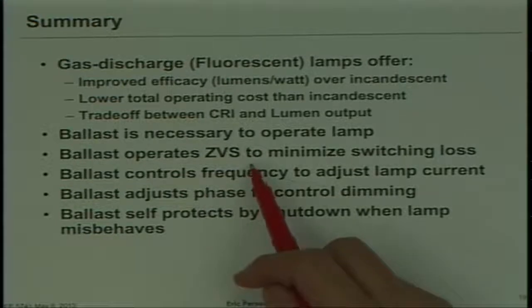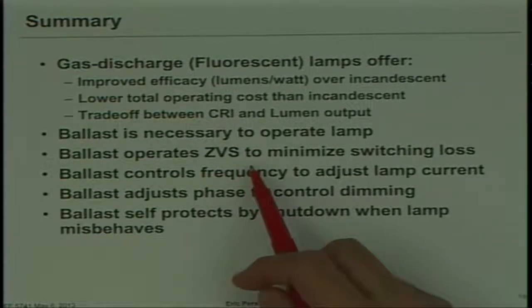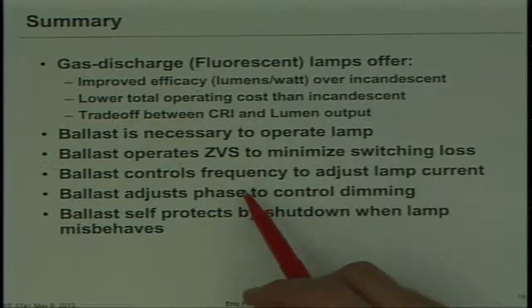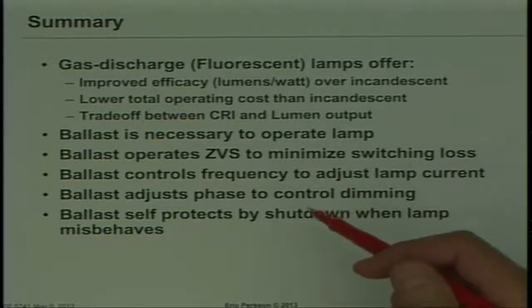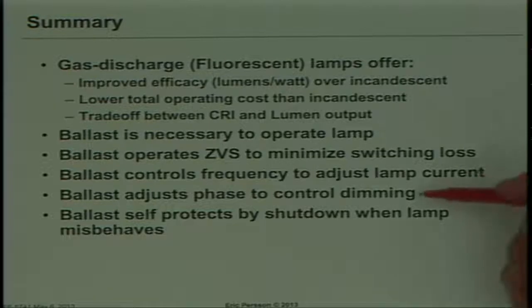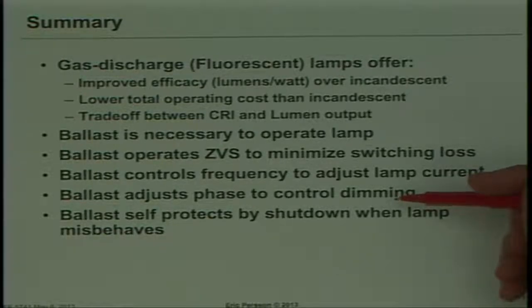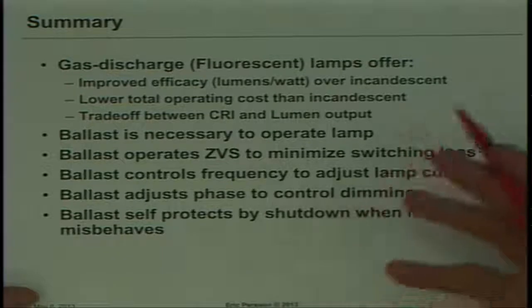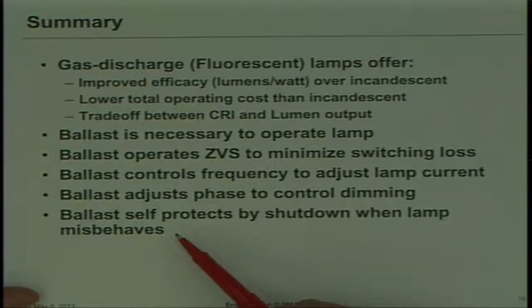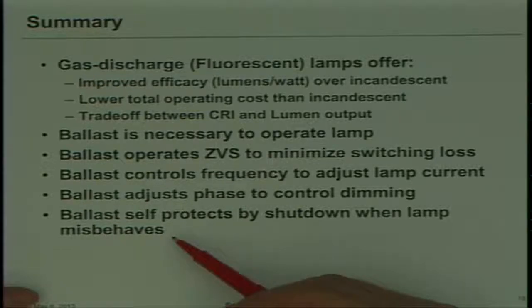The ballasts operate in ZVS, so these are operating parallel resonant above resonance, and this is to minimize the switching frequency. Control parameter is basically frequency, so by ramping frequency up and down, you can run through all these modes and control the current and power to the lamp. For dimming, you can adjust the, essentially by shifting frequency, you can change the phase between lamp voltage and current and get nice linear dimming. Ballasts need to be able to recognize when there are fault conditions and take the appropriate corrective action. For example, if the lamp breaks, you don't want to be trying to deliver high voltage and keep striking over and over again because it caused fires or personal hazard. So they need protection circuits to take care of that.